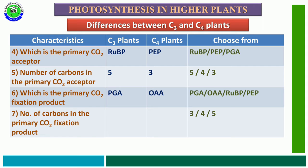The seventh characteristic feature is the number of carbons in the primary CO2 fixation product. The options are 3, 4, or 5. In C3 plants, the primary product is phosphoglyceric acid, which consists of 3 carbons — and due to this, the pathway is named the C3 pathway and such plants are called C3 plants. In C4 plants, the primary product is oxaloacetic acid, which has 4 carbons — so the pathway is called the C4 pathway and such plants are called C4 plants.